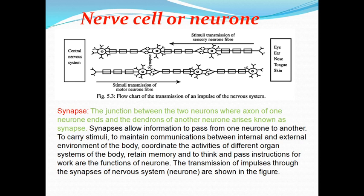The junction between two neurons, where the axon of one neuron ends and the dendrons of another neuron arise, is known as the synapse.